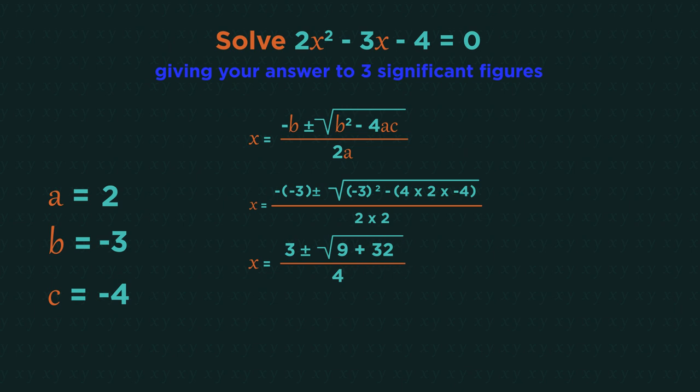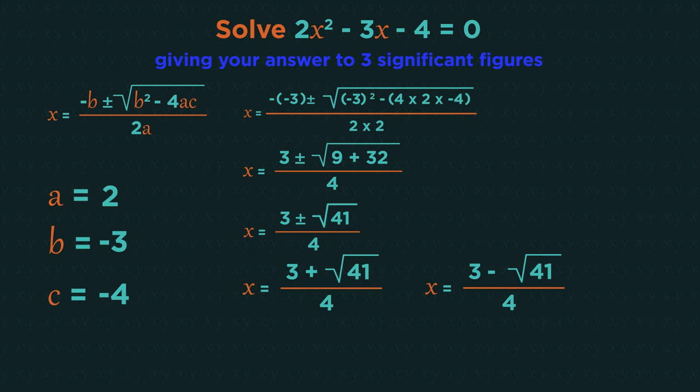Or we can simplify it a bit further. 3 plus or minus the square root of 41 all divided by 4. And then type this into our calculator. From your calculator you should get x equals 2.35 and x equals minus 0.851.